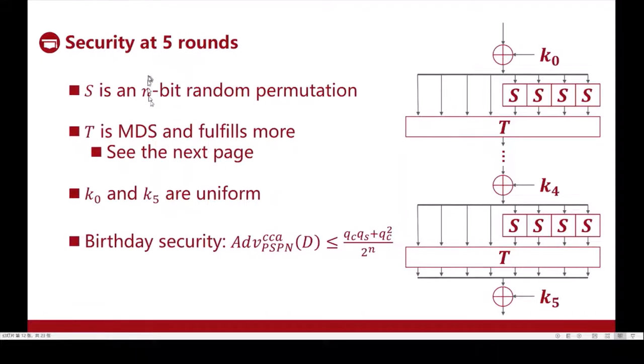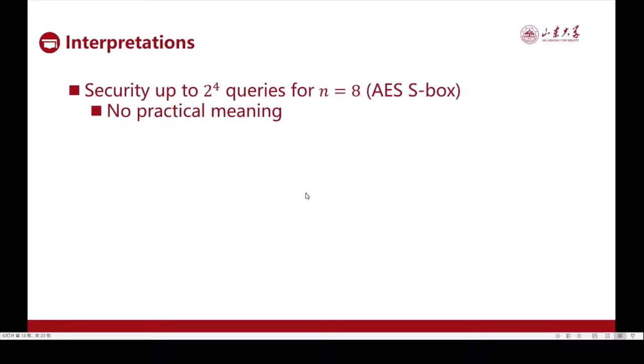Under the assumption that all the S-box evaluations in the network use the same S-box S, and S is an n-bit public random permutation, and the same linear transformation T is used in the five rounds with T being slightly stronger than MDS permutation, and the first and final key additions use uniformly distributed keys K0 and K5, we prove such a security bound. Assuming the distinguisher makes QC queries to the left construction oracle and QS queries to the right S-box oracle, we prove such a security bound. This type of birthday bound is common in similar probable security treatments.